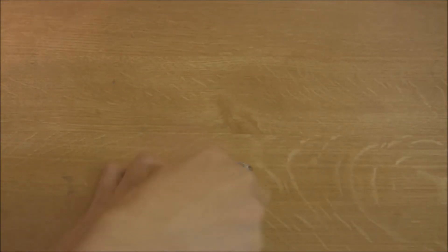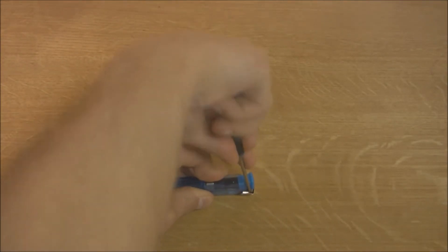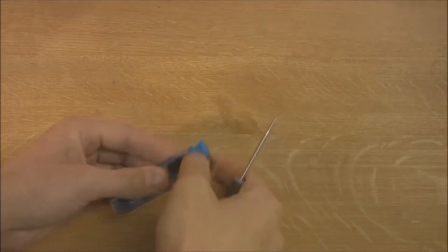To take apart the lighter, start by taking a flathead screwdriver and working away at the metal plate where the flame comes out. If you work from the switch it should be quite easy.